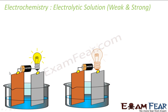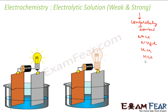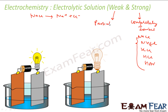Going deeper into electrolytes, there are two kinds: weak electrolytes and strong electrolytes. Substances that are completely ionized in aqueous solution are called strong electrolytes — for example, HCl, NH₄Cl, KCl, and HBr. The moment you put HCl in water it almost completely becomes H⁺ and Cl⁻ ions.